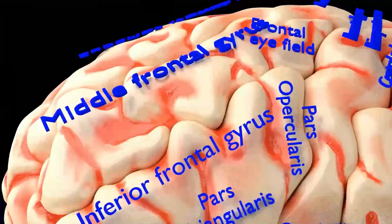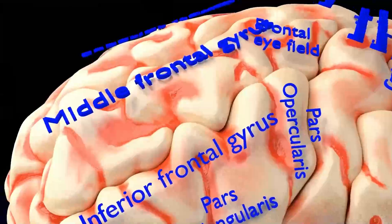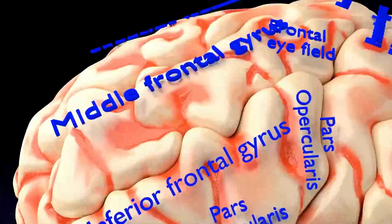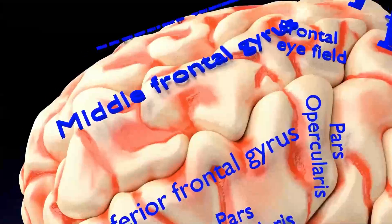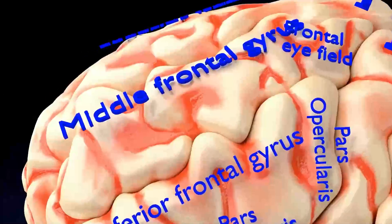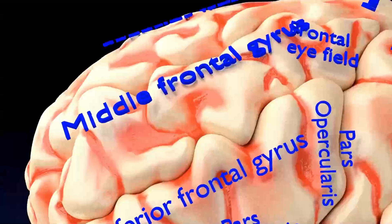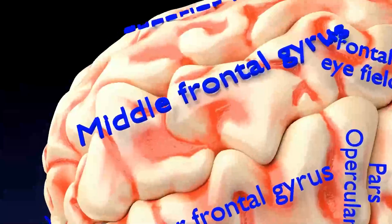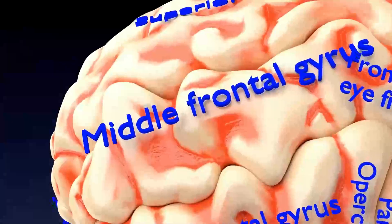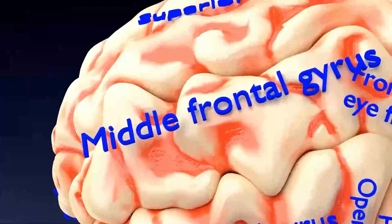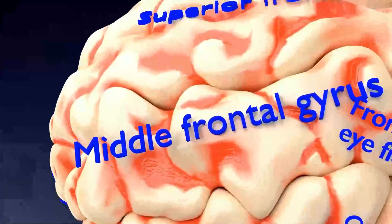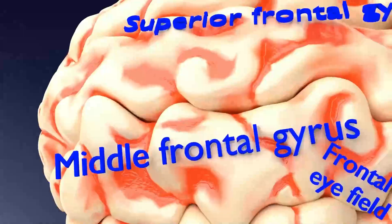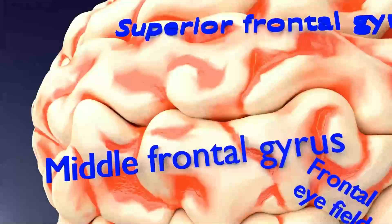The middle frontal gyrus in the dominant left cerebral hemisphere plays a key role in the development of literacy, while the non-dominant right middle frontal gyrus is responsible for numeracy.